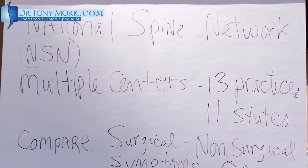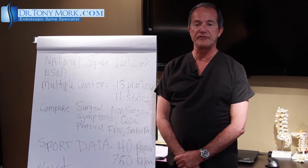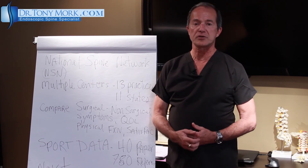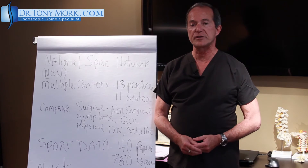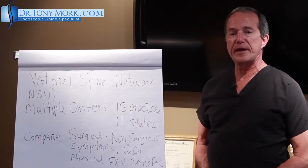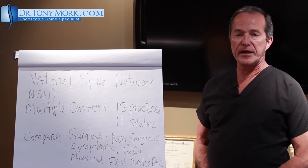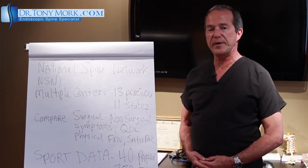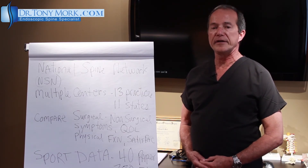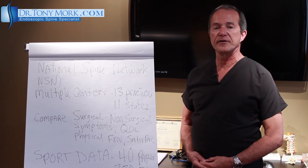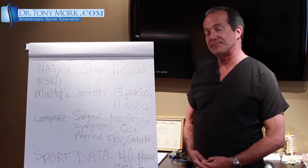One might wonder how this data is collected. It's collected through a network of spine surgeons called the National Spine Network — multiple centers, 13 practices in 11 states — providing a pretty big diversity of people treating these problems. Within those practices, there are both randomly controlled studies and observational studies. The purpose of the National Spine Network is to compare non-operative and operative treatment and its effect on symptoms, quality of life, physical function, and patient satisfaction.